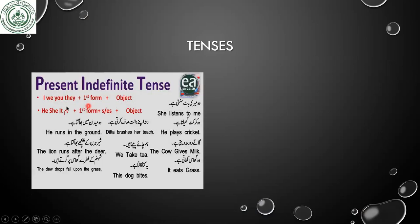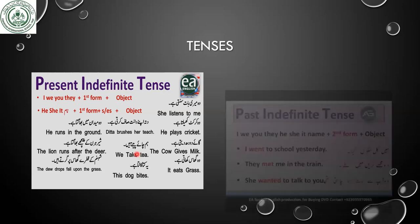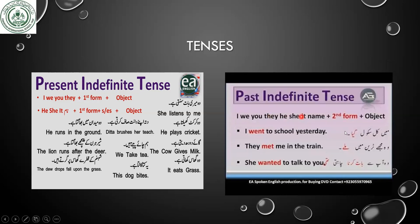Here we have tenses again, dear students. Present indefinite tense: the formation is subject — I, we, you, they — plus first form of verb plus object. Like 'I write a letter.' For he, she, it — first form plus 's' or 'es' with the third person singular. You can see Urdu sentences as well as English examples. Past indefinite: 'I went to school yesterday,' 'They met me in the train,' 'She wanted to talk to you.' These are past indefinite tense. Now you have to change Urdu sentences into English, so you must know how to use first and second form and how to identify which tense it is.